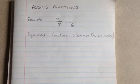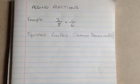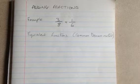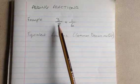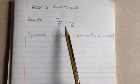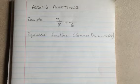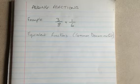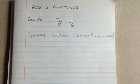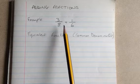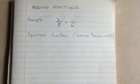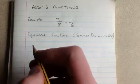We're going to use equivalent fractions to find a common denominator and add those two fractions together. The first thing we need to do is find out what that common denominator is going to be. To do that we need to find the lowest common multiple of the denominators of the two fractions. We're going to list the multiples of 8 and 6 until we find a number that's in both lists.